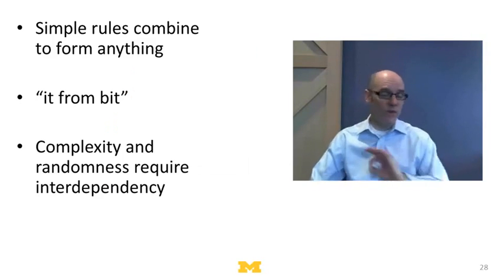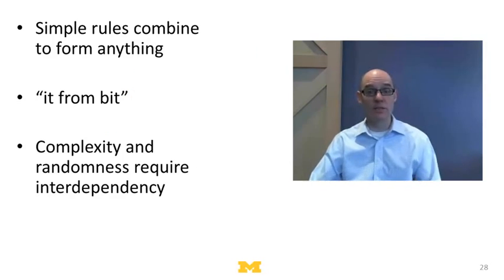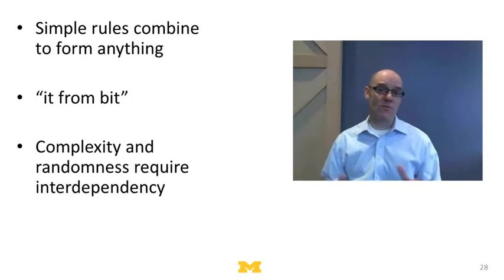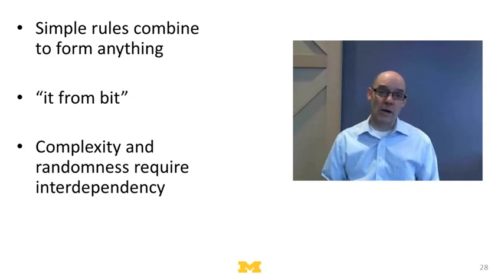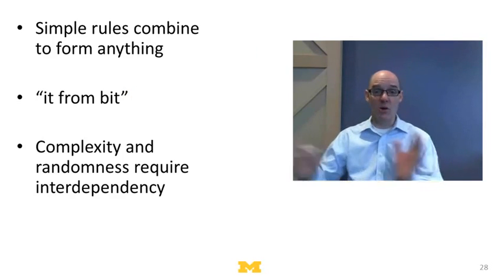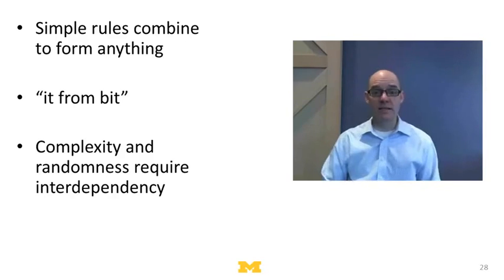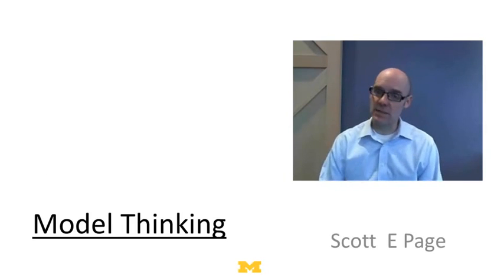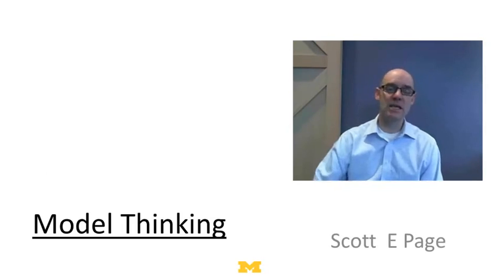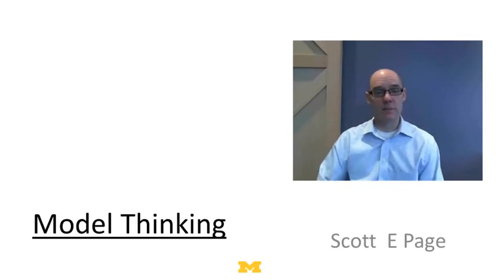What do we learn from this very simple toy model? First, simple rules can combine to form just about anything — incredibly simple rules. Second, we get this profound idea of 'it from bit.' And third, complexity and randomness require some intermediate level of interdependency — you can't have it be that you always go on or always go off. You need interdependency in the actions in order to create complex phenomena. So one-dimensional cellular automata is a toy model, but it gives us a deep insight: if we see complexity out there in the world, it's likely because the rules that things are following are interdependent.